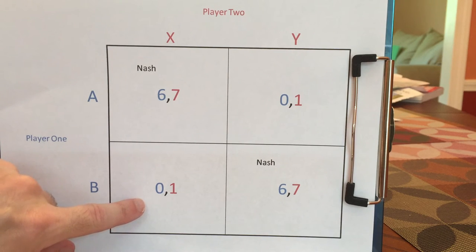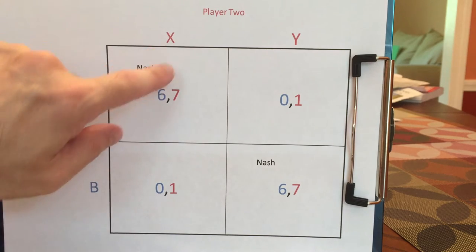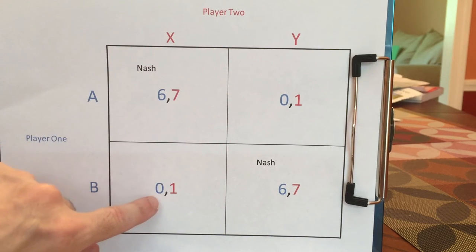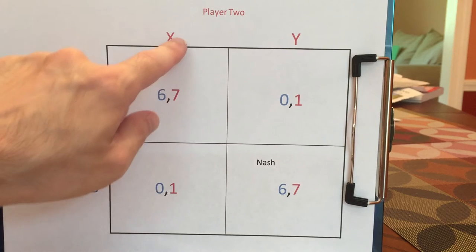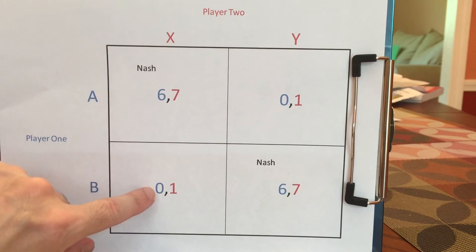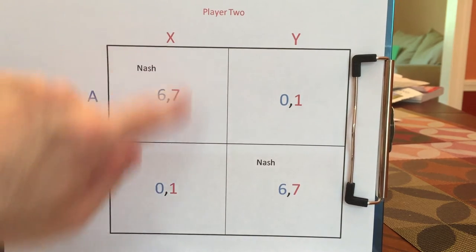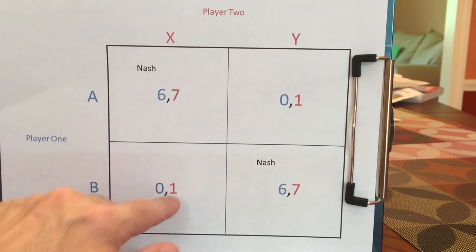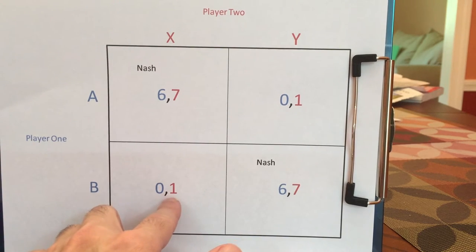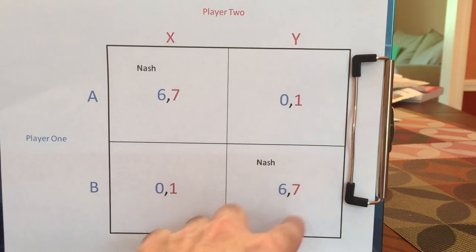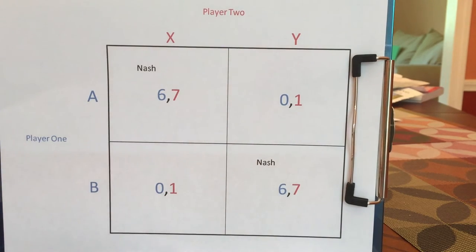BX is not a Nash Equilibrium because player one will regret. If player one and player two end up at BX, player one would say: had I known X would be played, I wouldn't have played B — I would have played A. I regret playing B given that X was played. And player two would say: given that B is played, I regret playing X because had I played Y, I would have done better — I would have gotten seven.